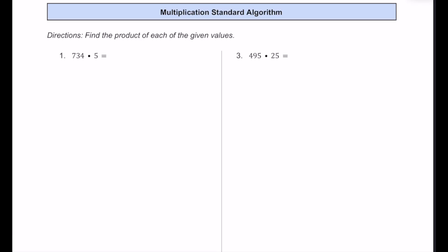In this video, let's practice multiplying numbers using the standard algorithm together. For number one, we have 734 multiplied by 5. The number that has more digits always goes on top when setting up our standard algorithm. So 734 definitely has more digits — we have 734, and we're going to multiply that by 5. This 5 only has one digit and it's in the ones place, so we'll put it underneath the 4 in the ones place.